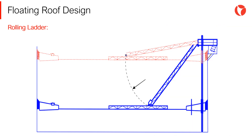Tanks with floating roofs will have a ladder that automatically adjusts to all roof positions during tank operation and shutdown. The ladder will have the ability to accompany the roof throughout the roof movement, without interfering with the normal position of the roof, supports, and any other element.